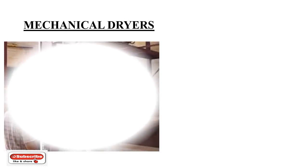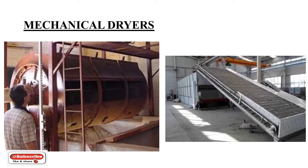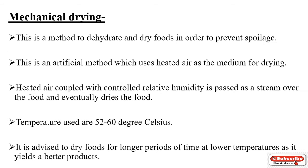Today's video is about mechanical dryers — a continuation of my previous video. Mechanical drying is a method to dehydrate and dry foods in order to prevent spoilage. This is an artificial method which uses heated air as a medium for drying. Heated air coupled with controlled relative humidity is passed as a stream over the food and eventually dries it.